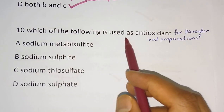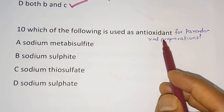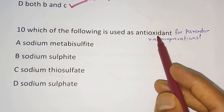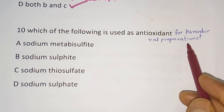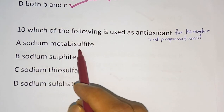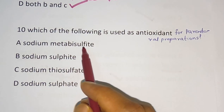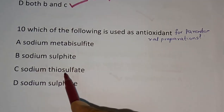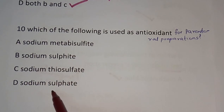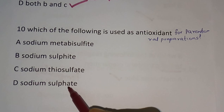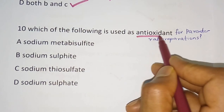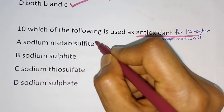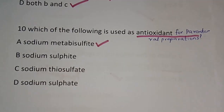Question 10: Which of the following is used as an antioxidant for parenteral preparation? Options: sodium metasulfate, sodium sulfate, sodium thiosulfate, sodium sulfate. The correct answer is sodium metasulfate.